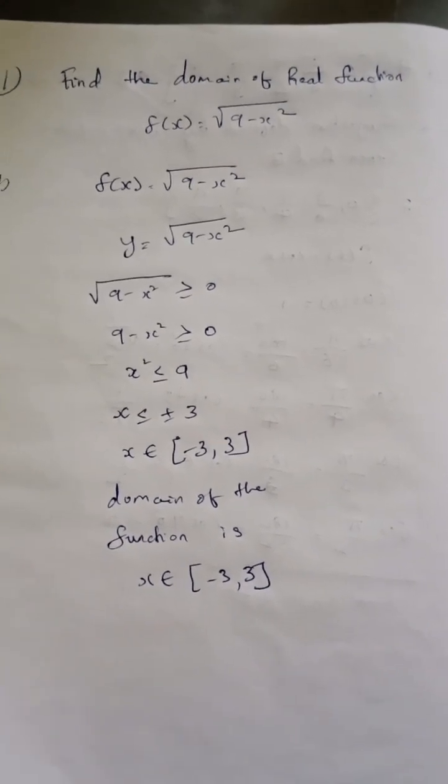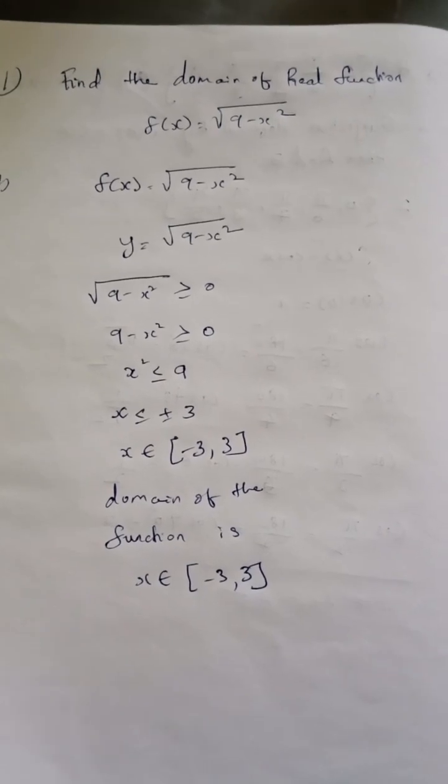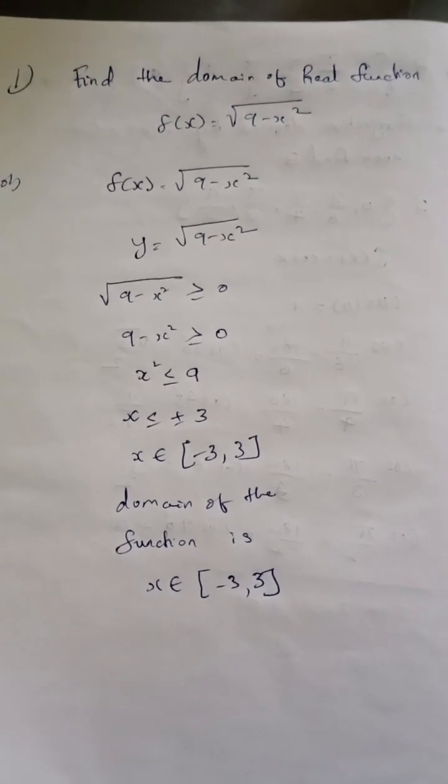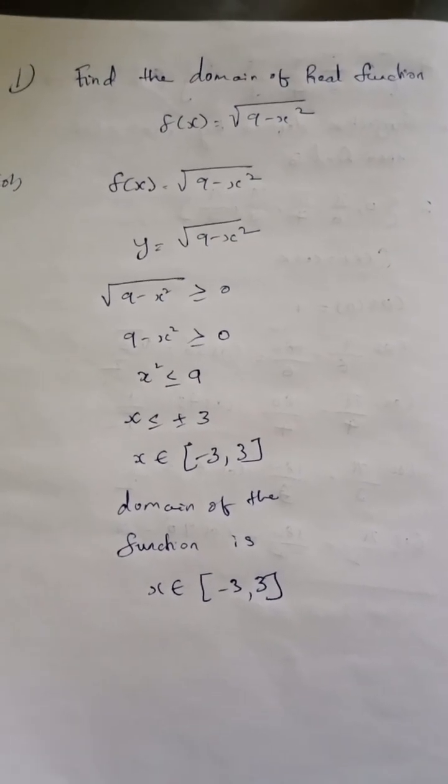As we already know, f(x) equals y. We have to write y equals square root of 9 minus x squared. And the next step is square root of 9 minus x squared greater than or equal to 0.